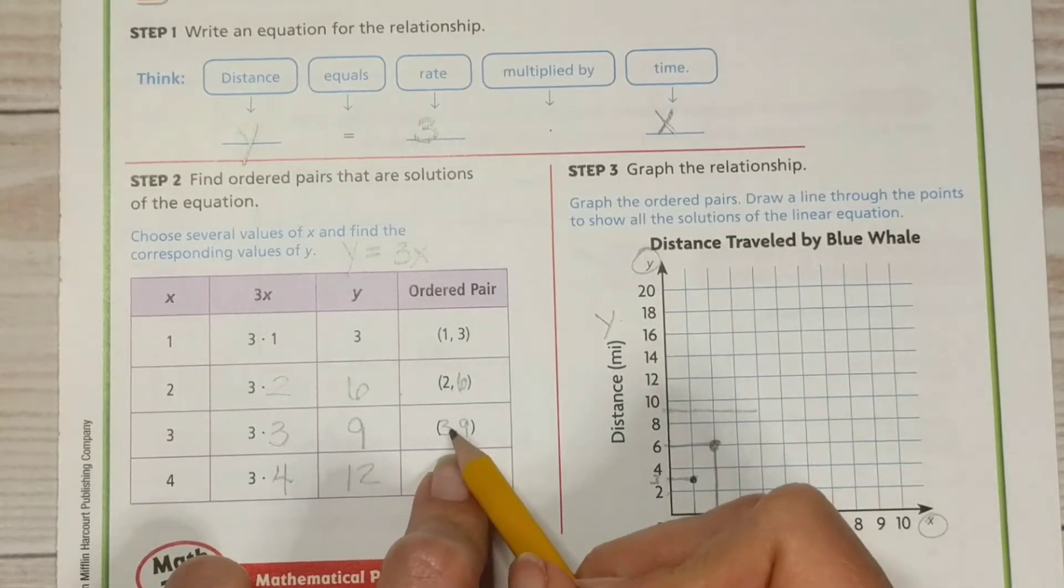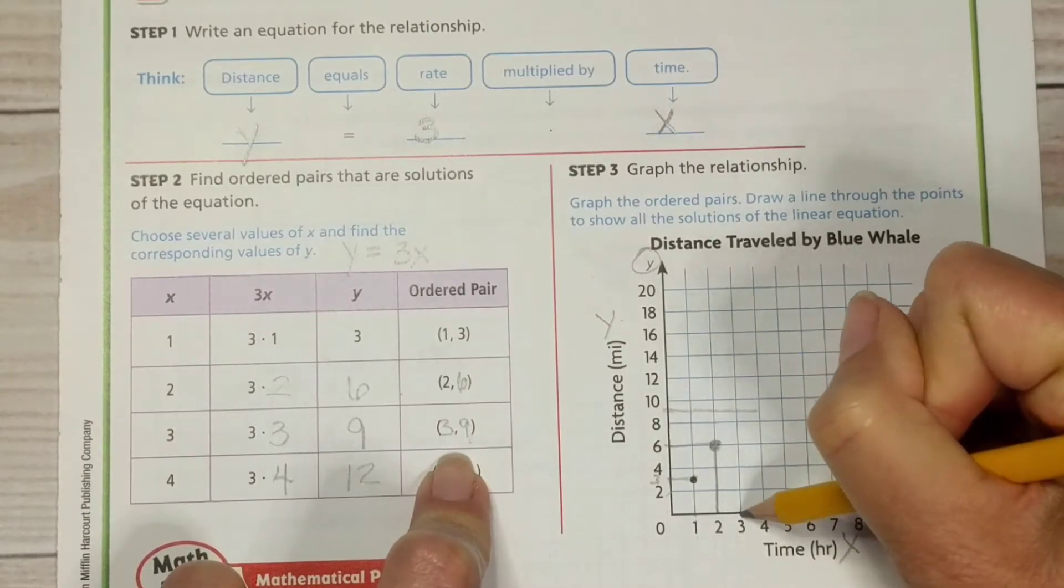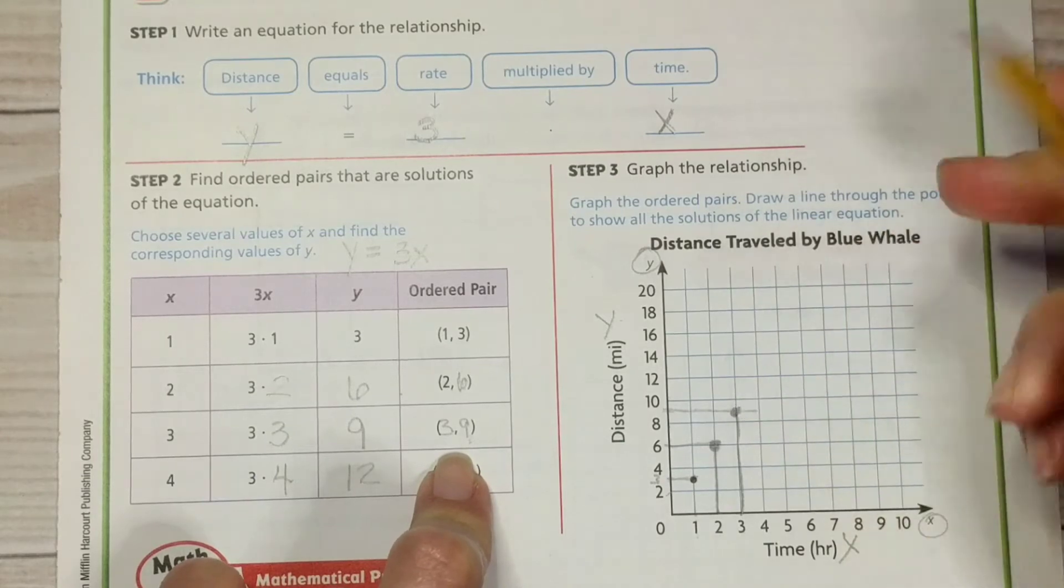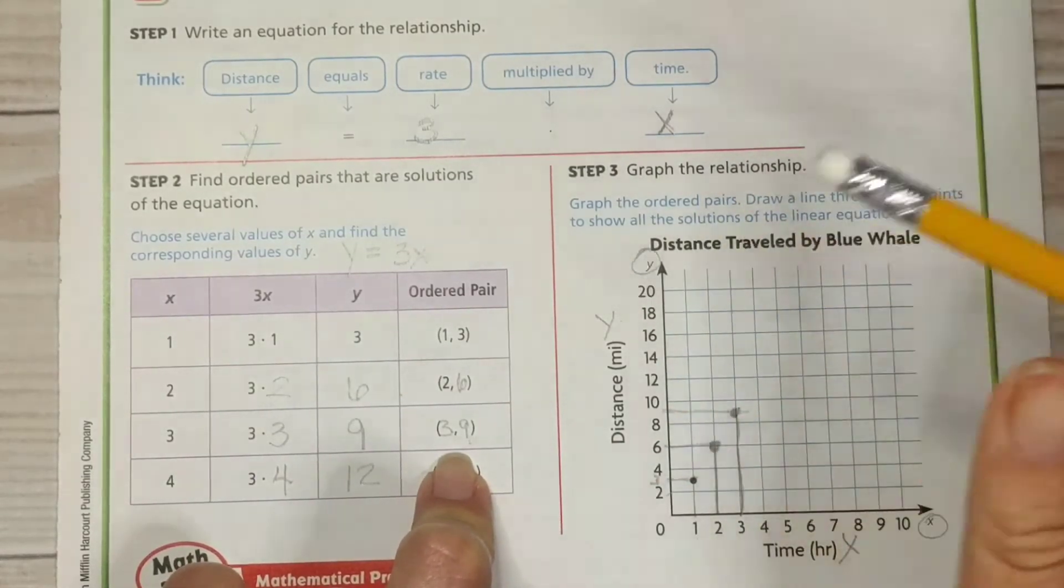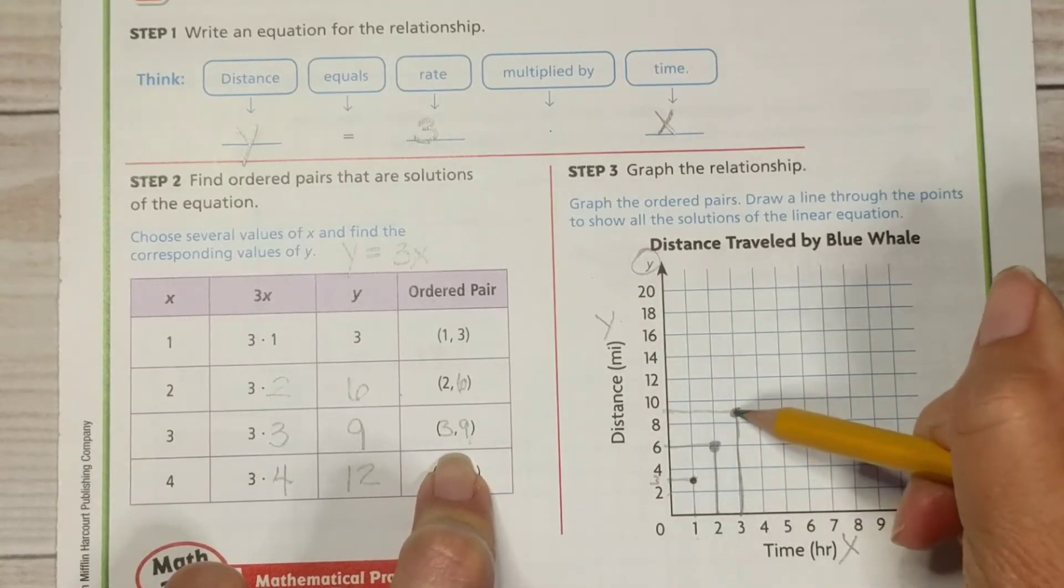Okay. All right. So 3 is our x value. Then we go up to 9 and put a dot right there. I'm going to go ahead and erase that little bit that's hanging over. All right. So this is the ordered pair 3, 9.